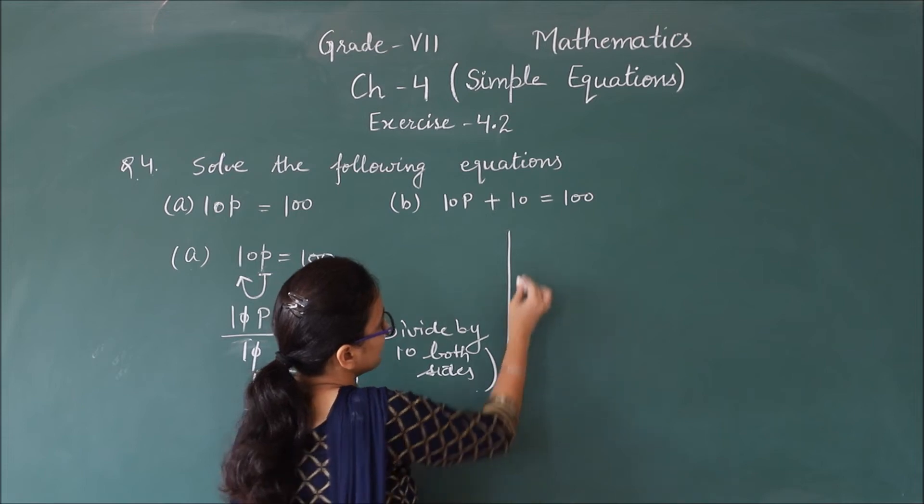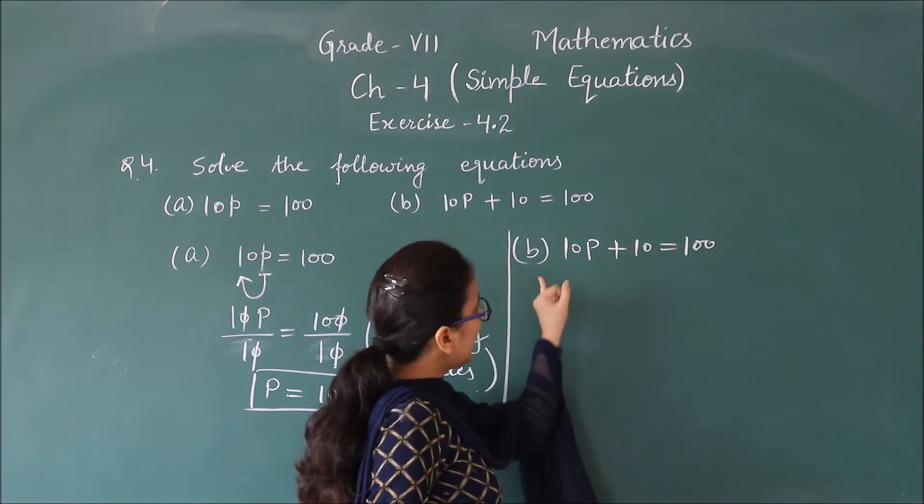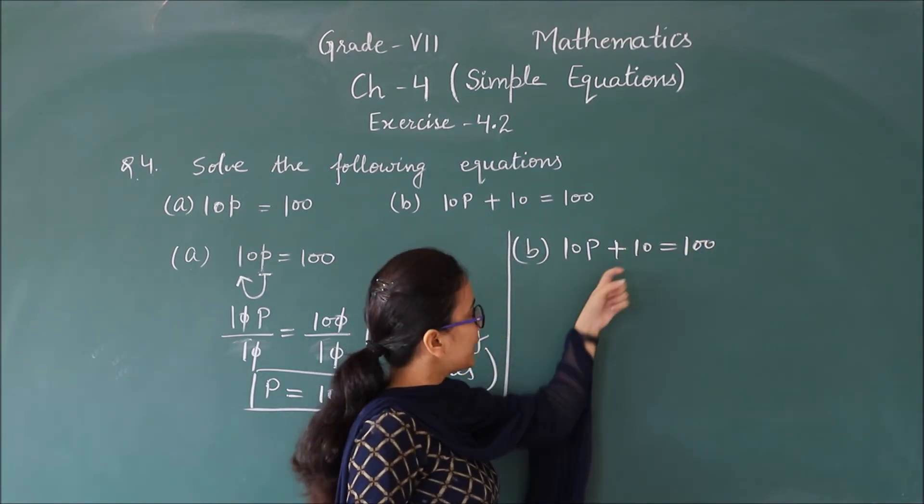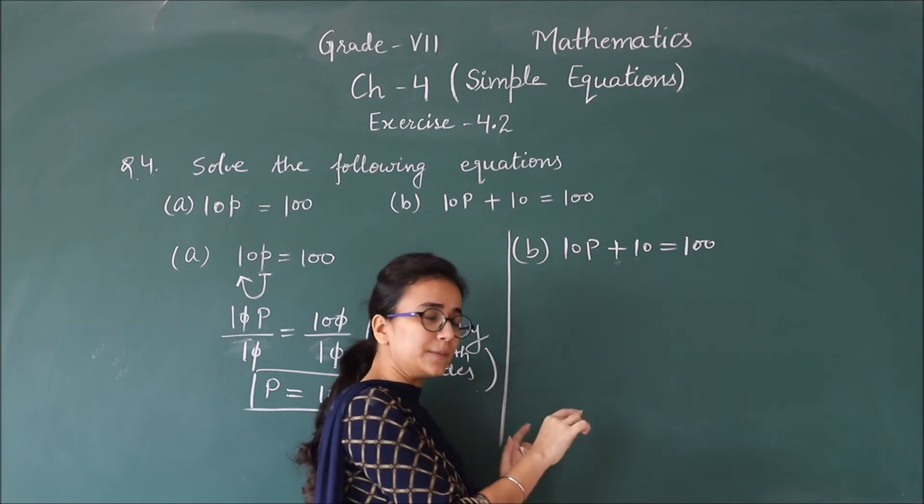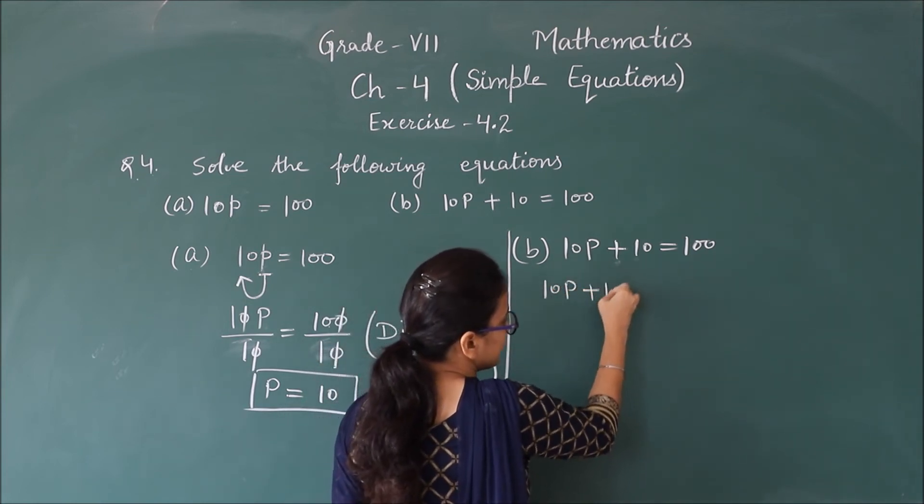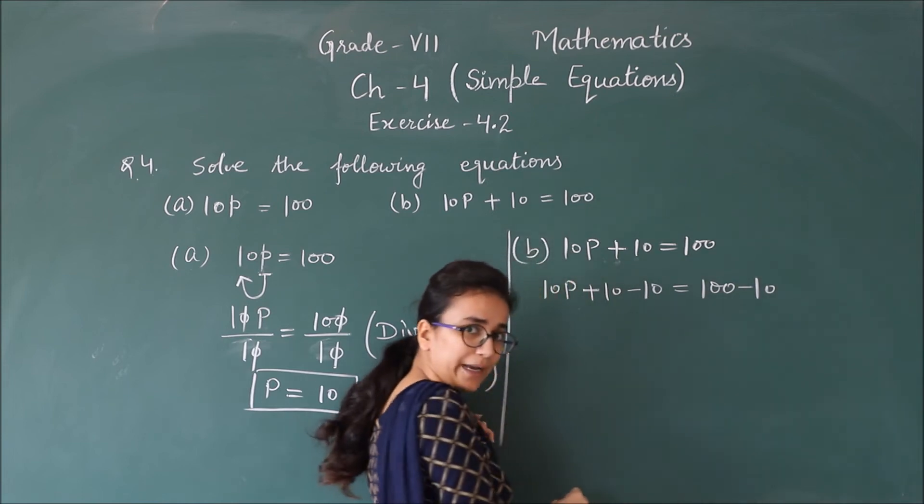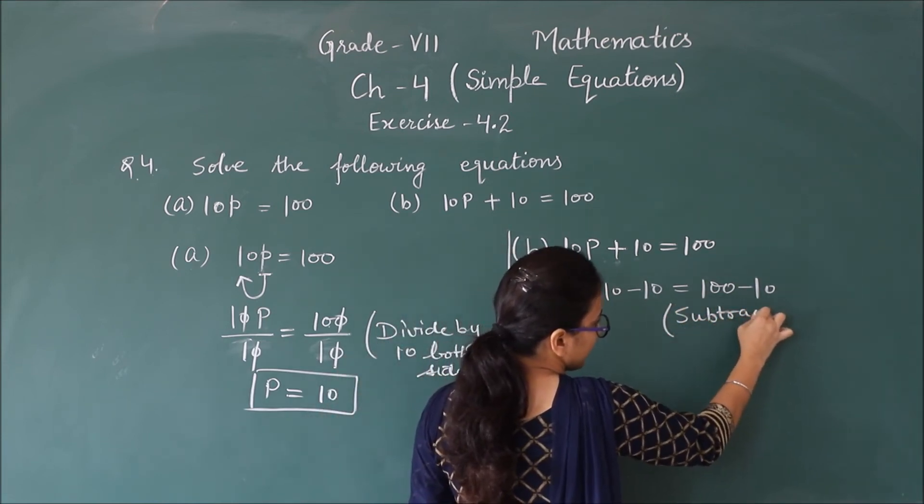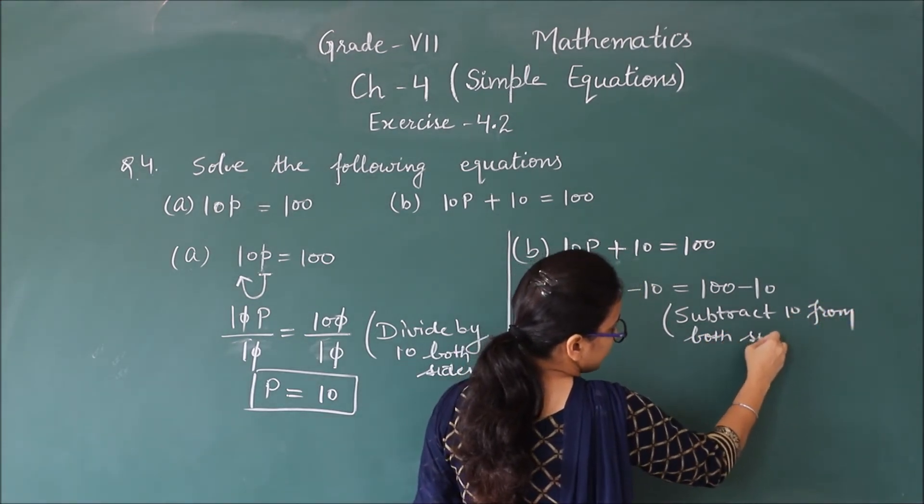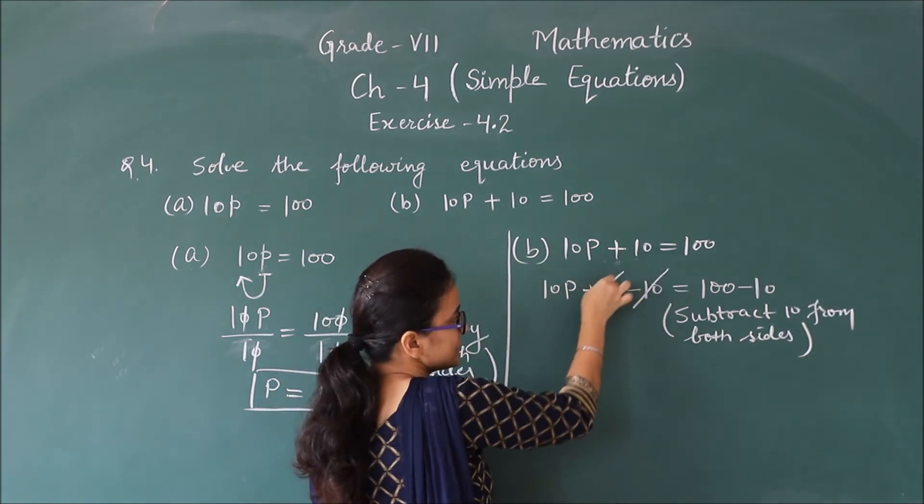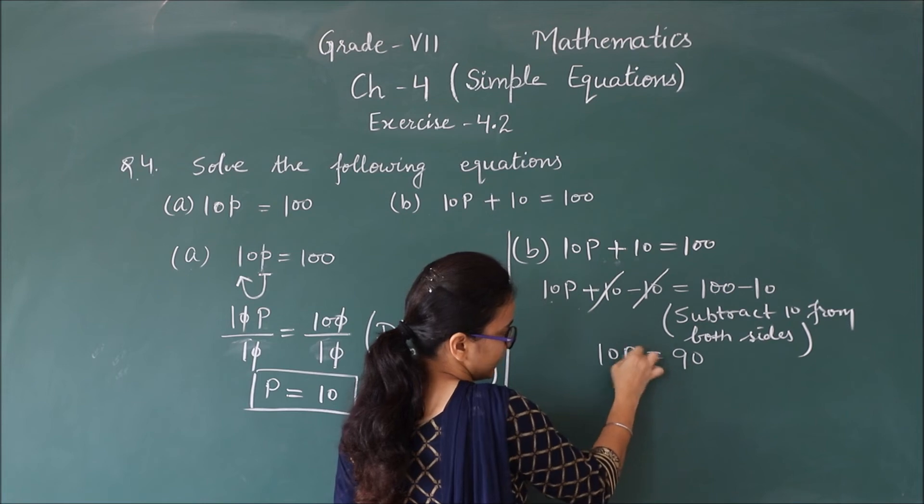Similarly next part, look. 10p plus 10 equals 100. Now here with 10p, 10 is being added. So first we need to remove that added 10. Here it's plus 10, so what do we need to do? Minus 10. 10p plus 10 minus 10 equals 100 minus 10 also. Subtract 10 from both sides. Clear? This 10 and 10 cancel, plus 10 minus. Here remains 10p.